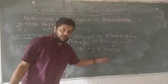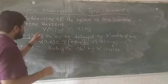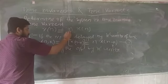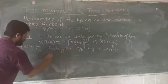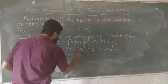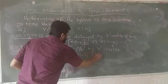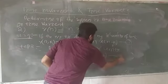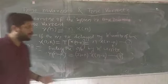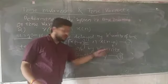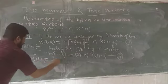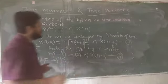Step two: delay the output by k units. We compute y(n-k) by replacing every n with n-k in the full equation. So y(n-k) = (n-k)·x(n-k). This is equation two. Comparing equation one, n·x(n-k), with equation two, (n-k)·x(n-k), they are not equal.